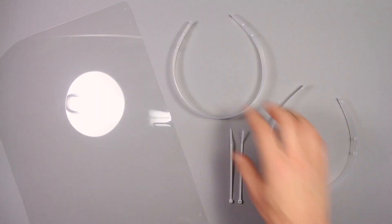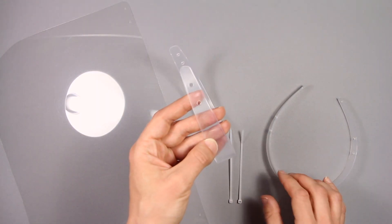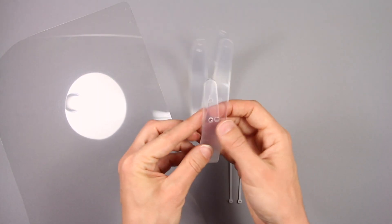This tutorial is for the simple Jersey City face shield design. Place headband A with four holes on the outside of headband B with six holes.